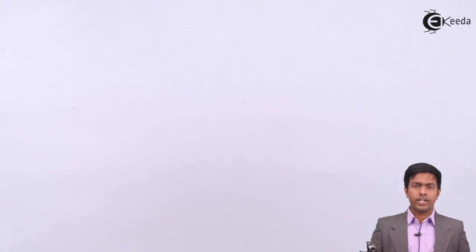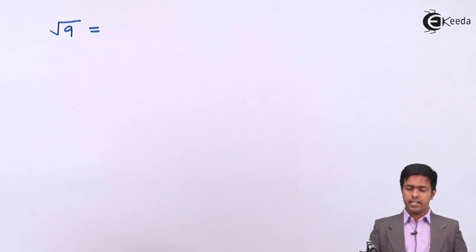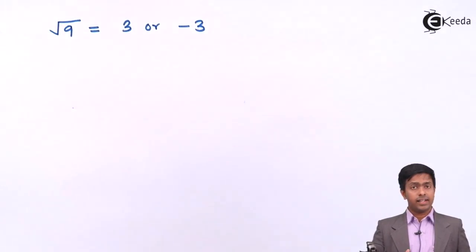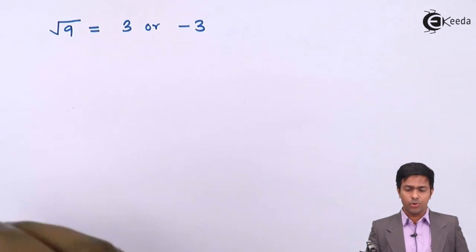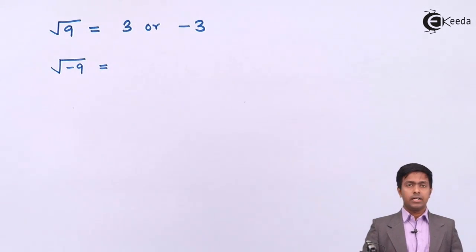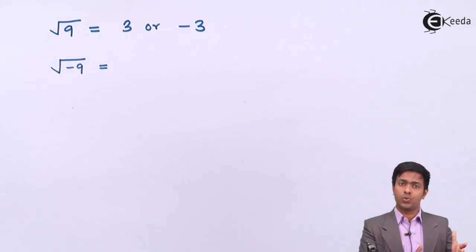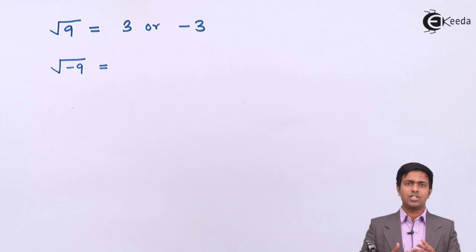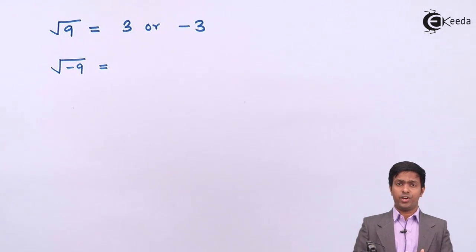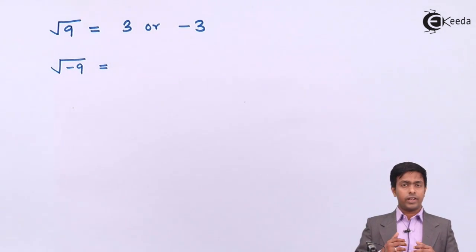Why exactly did complex numbers come into existence? If I ask you a simple question: what is the square root of 9, you would say plus 3 or minus 3 — and that's correct. But if I ask what is the square root of negative 9, it becomes very difficult, because from school days we have learned that the square root of a negative number does not exist. So how do we find it?